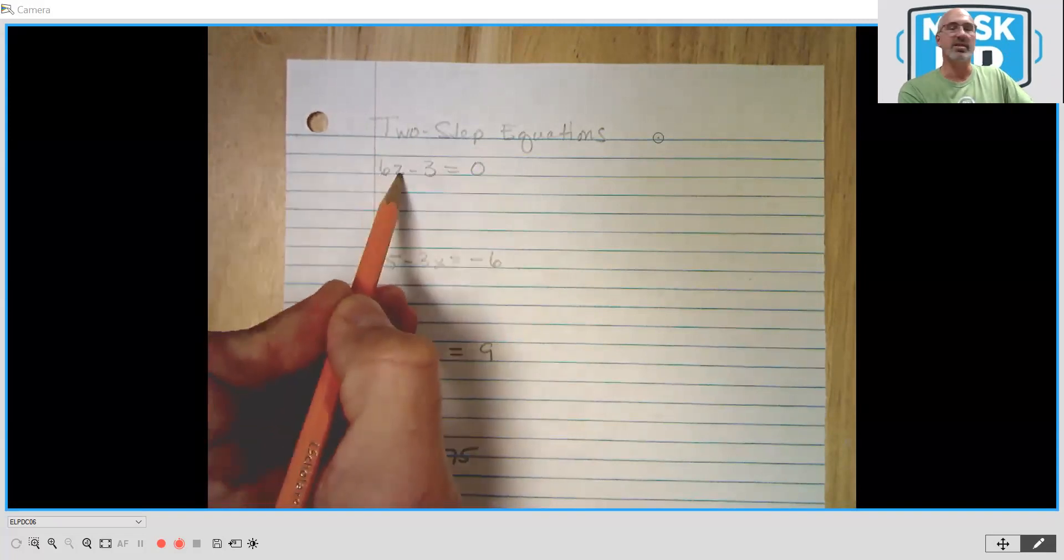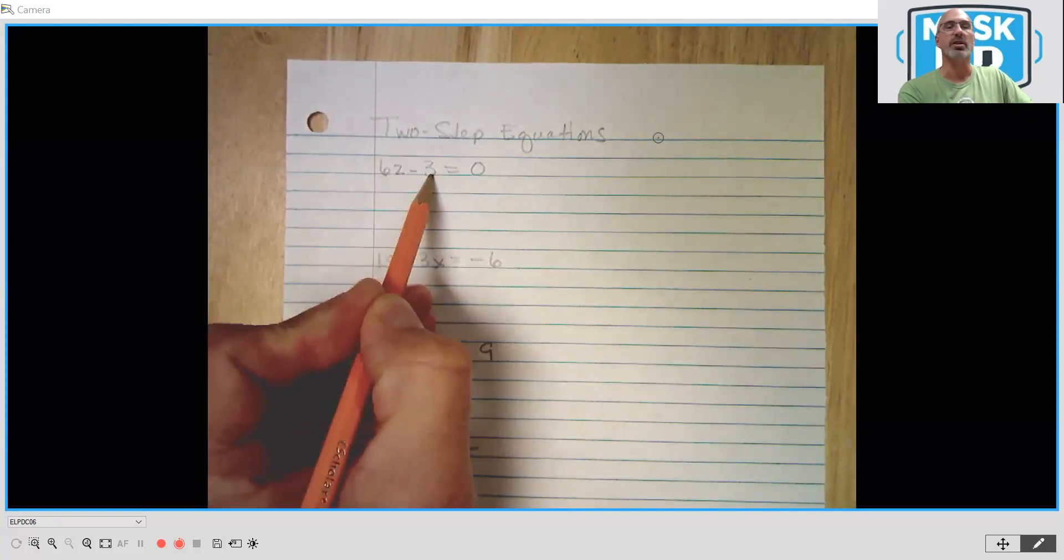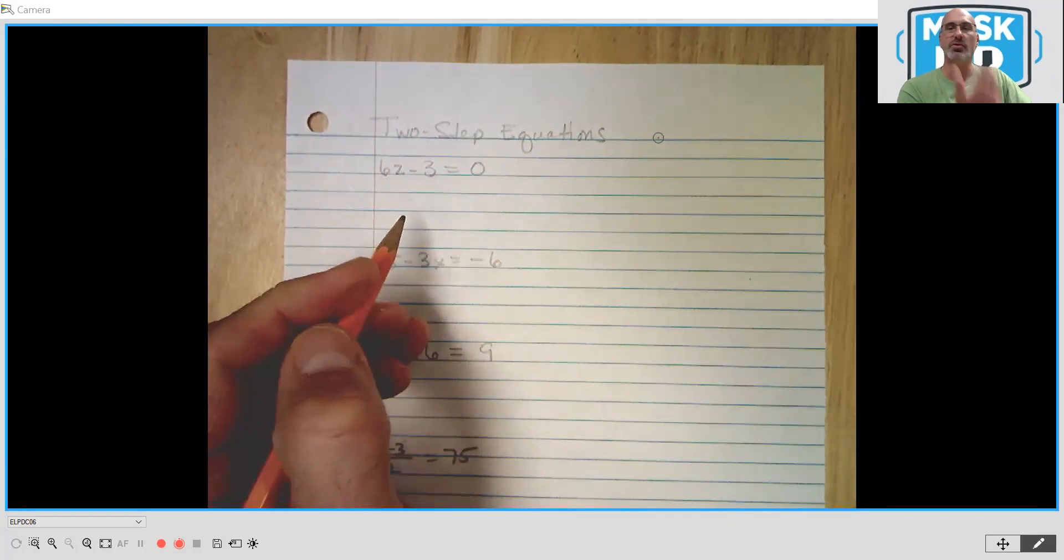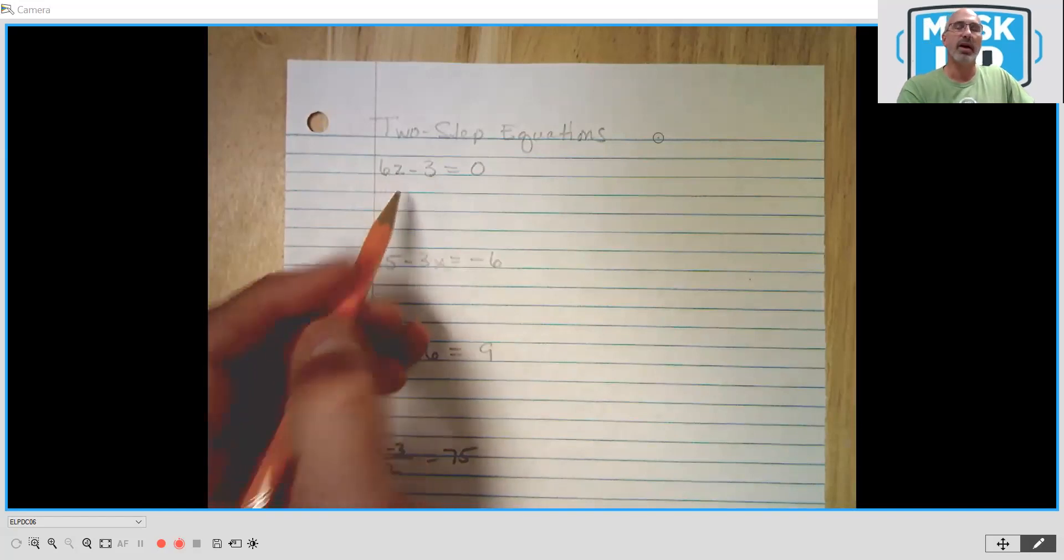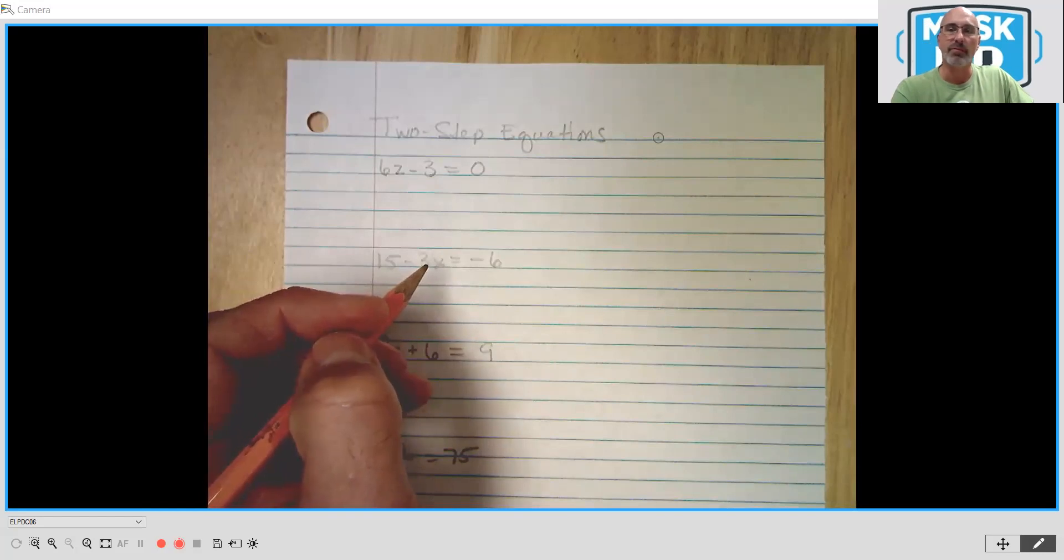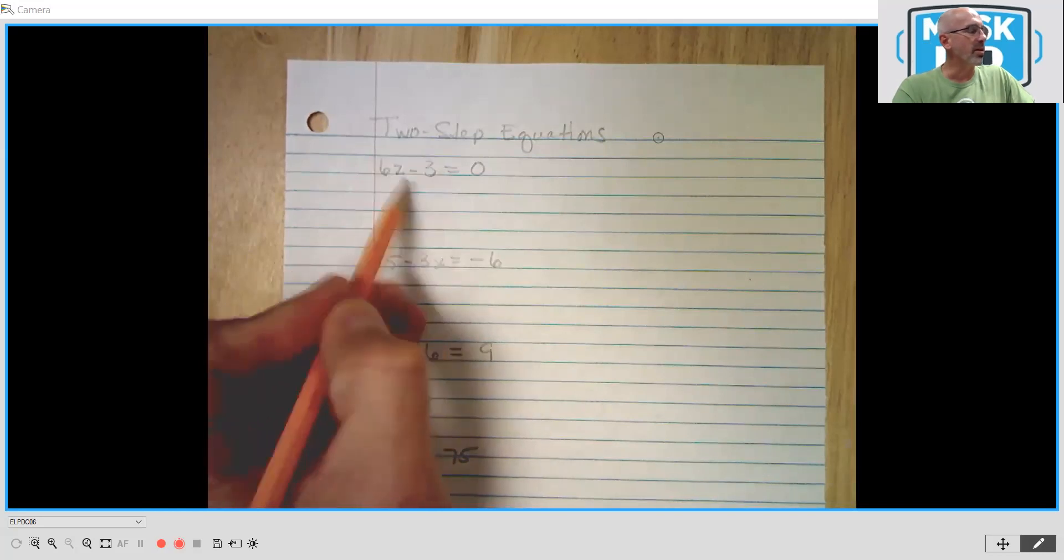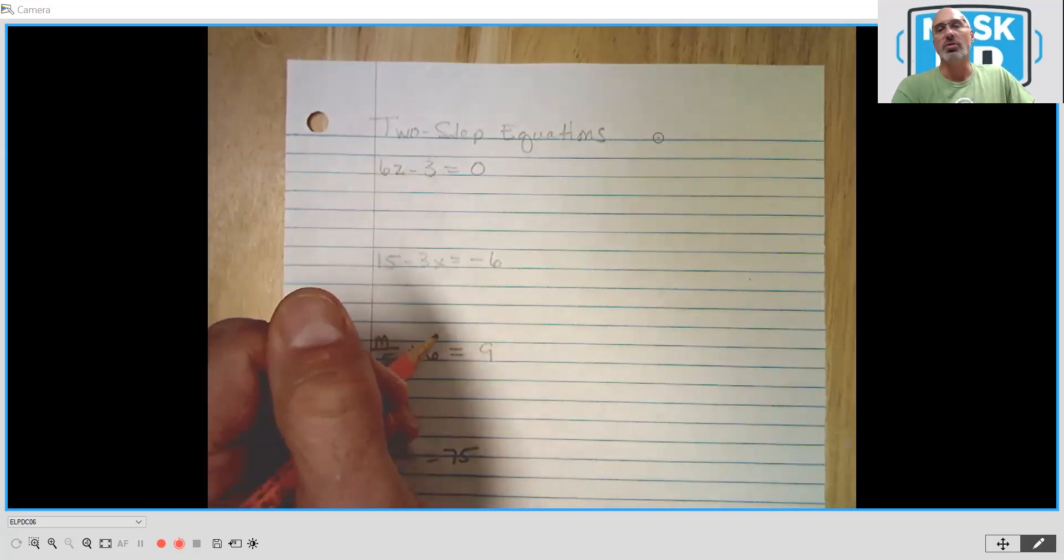So let's look at this kind of really basic two-step equation. We have 6Z, so six times Z. It's a multiplication. And then we have a subtraction in there. That's why we call it a two-step. We have two different operations that we have to undo. So what we have to kind of think about is almost the reverse of PEMDAS. When you have either multiplication, division, and subtraction or addition, we want to undo the adding or subtracting first.